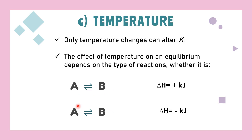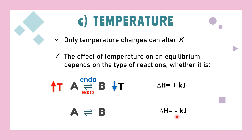A positive delta H indicates that forward reactions favour endothermic reactions, meaning the temperature of the system is low, while backward reactions favour exothermic reactions when the temperature of the system is high. In contrast, a negative delta H indicates that forward reactions favour exothermic reactions at high temperature, while backward reactions favour endothermic reactions at low temperature. Always check whether the forward reaction is exothermic or endothermic before starting your explanation.